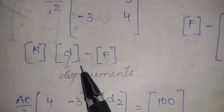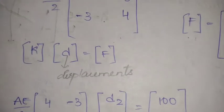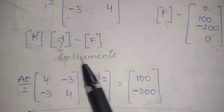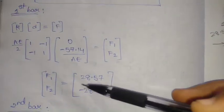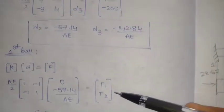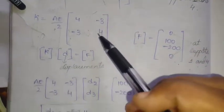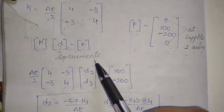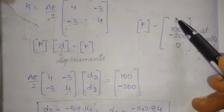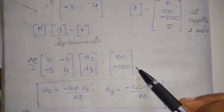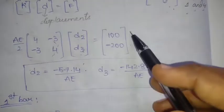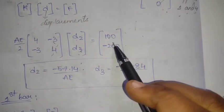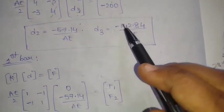The basic formula to solve is KD = F. At the global level we solve for the displacements at the nodes. The global matrix after eliminating fixed nodes gives us D2 and D3, since D1 and D4 are automatically zero. Inverting the reduced stiffness matrix and multiplying by the force vector in the calculator gives us the displacement values D2 and D3 at nodes 2 and 3.